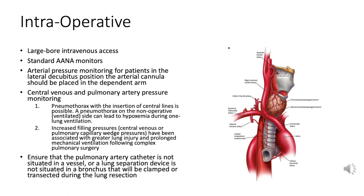Intraoperatively, patients presenting for thoracic surgery should have large-bore intravenous access into a peripheral vein or a central vein using the internal jugular, subclavian, or femoral veins. Large-bore IVs allow for rapid fluid administration, which may be necessary during surgery, especially if there is significant blood loss.